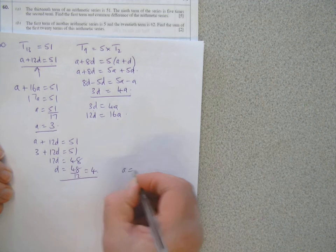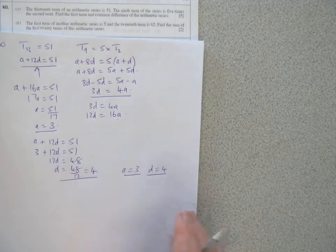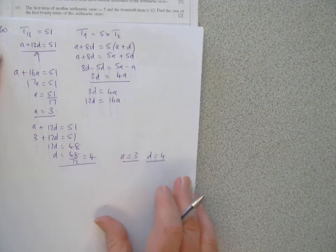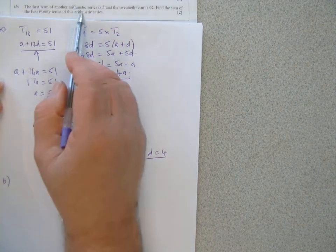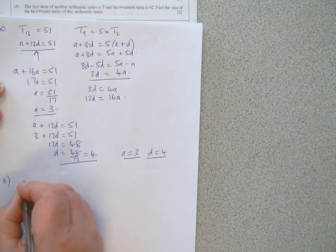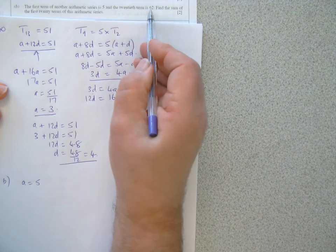So A is 3, and D is 4. And B, the first term of another AP is 5, so that's A is 5, and the 20th term is 62.